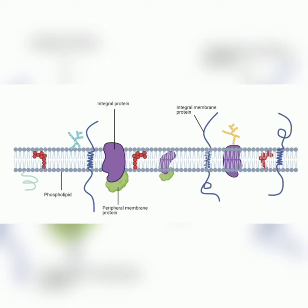The genetic material of a virus is either DNA or RNA and never both. Only RNA is present or DNA is present, but both are not present at the same time.